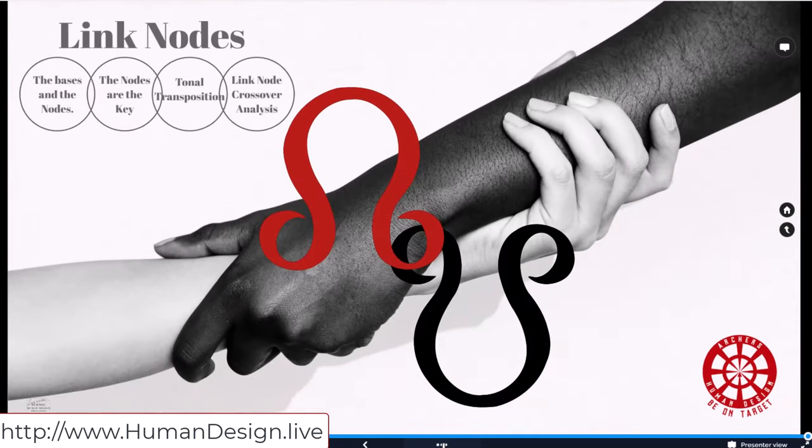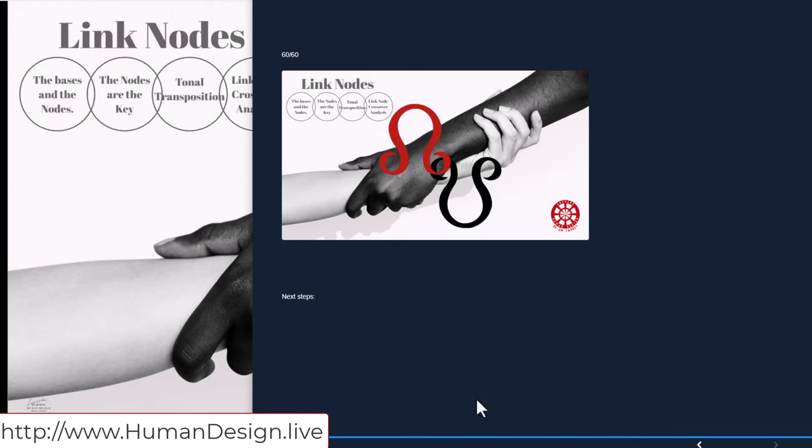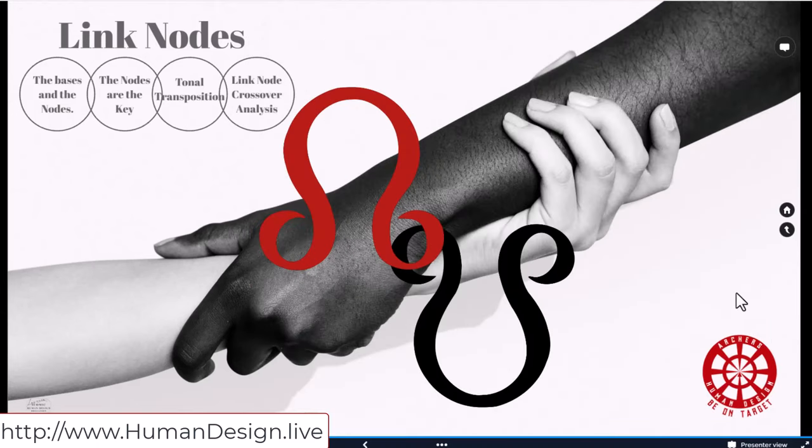So that's the thing that I want to ask you, invite you all to take a look at. Just those link nodes, kind of process it, ponder it. And Ra wants us to look at our storyline. So look at your storyline this week, your cognitive potential and think about your life process.